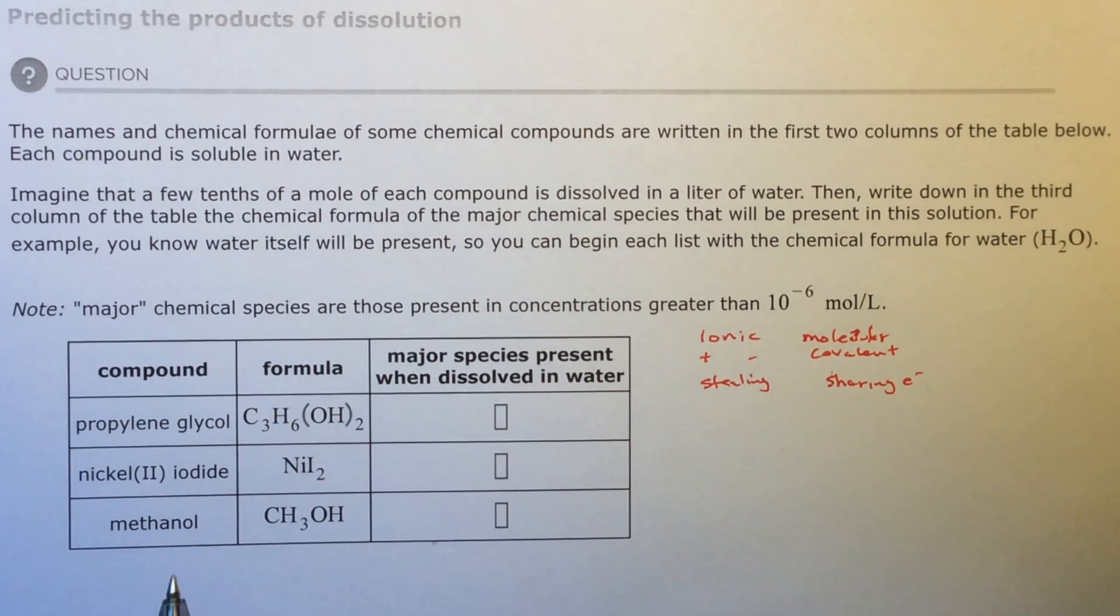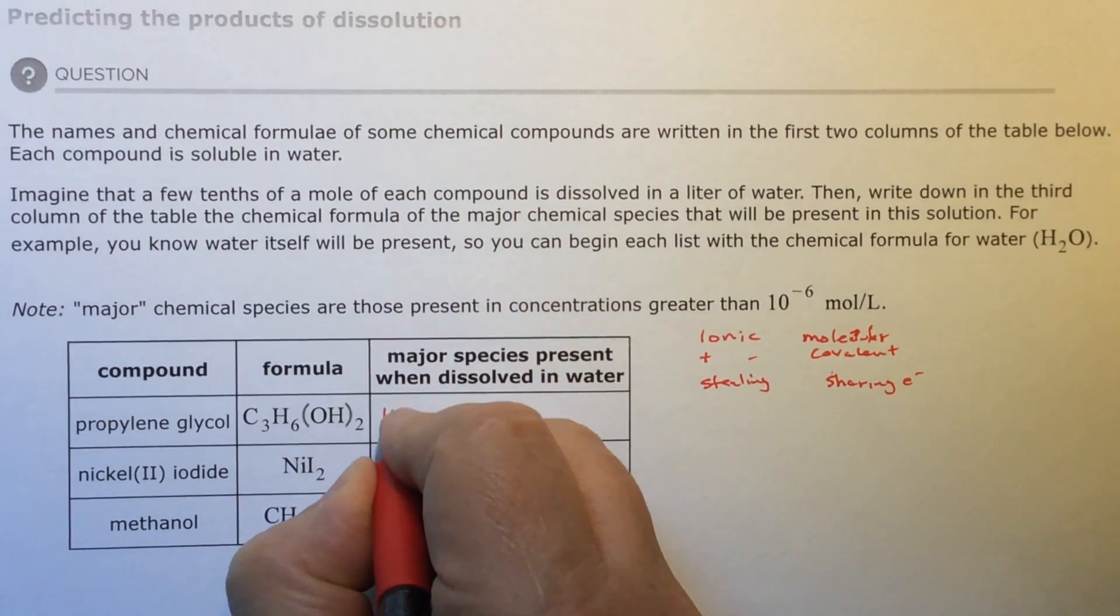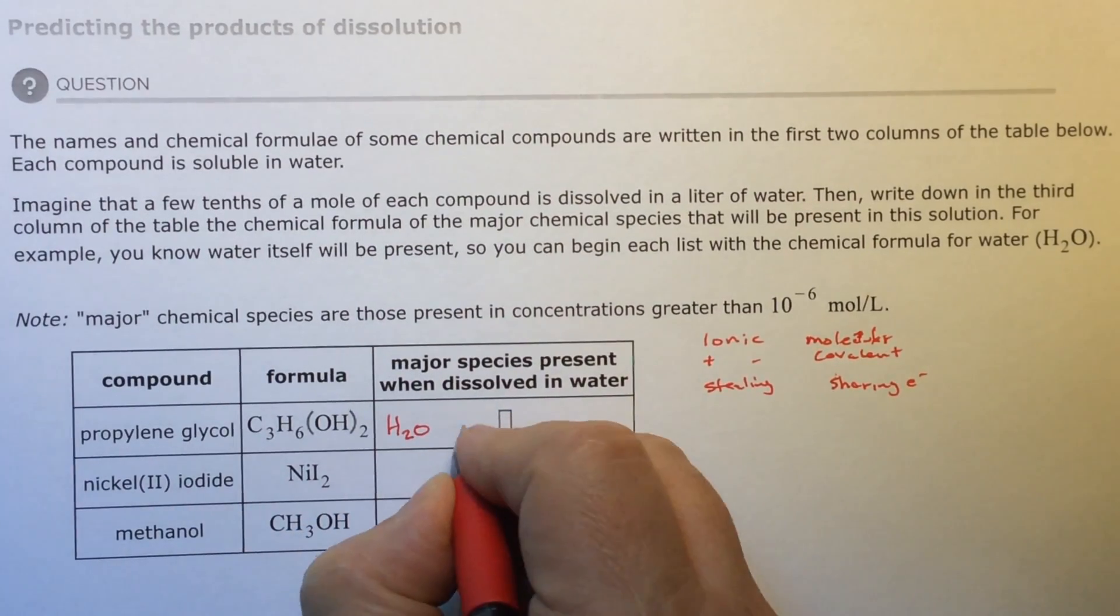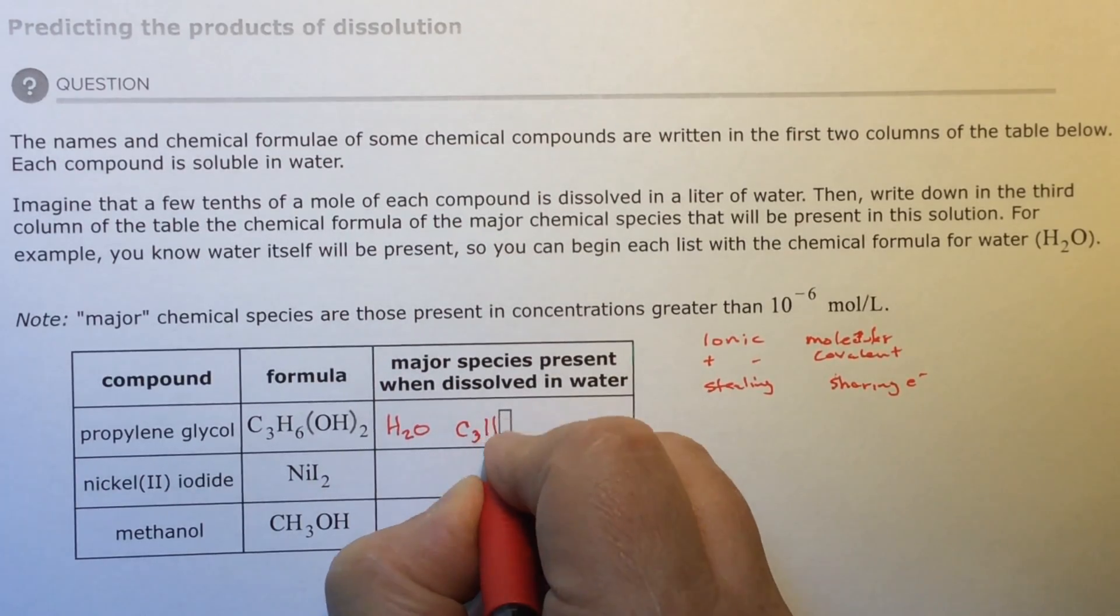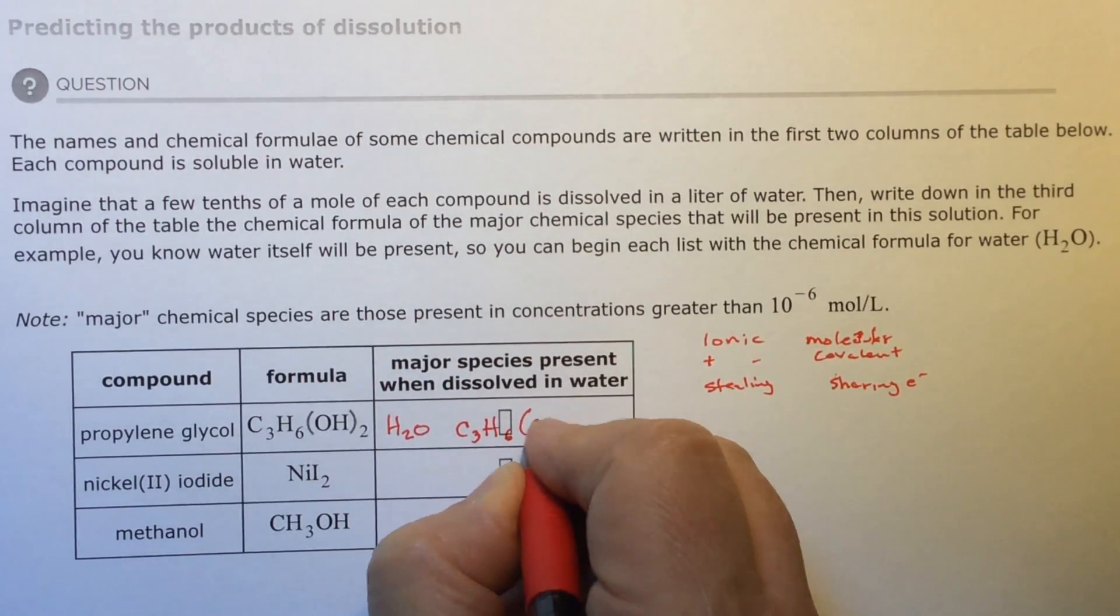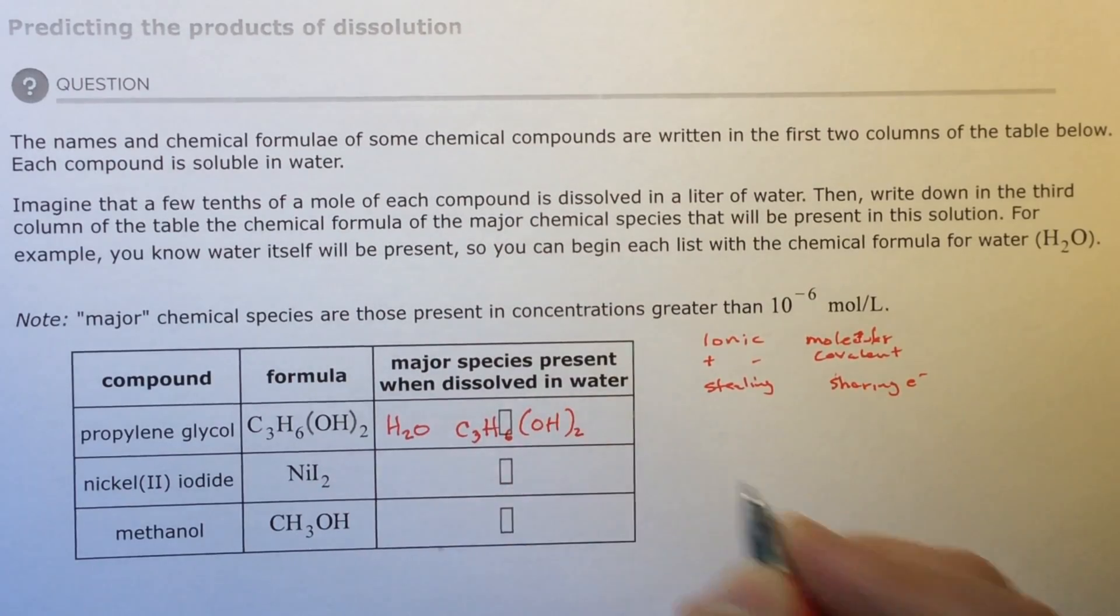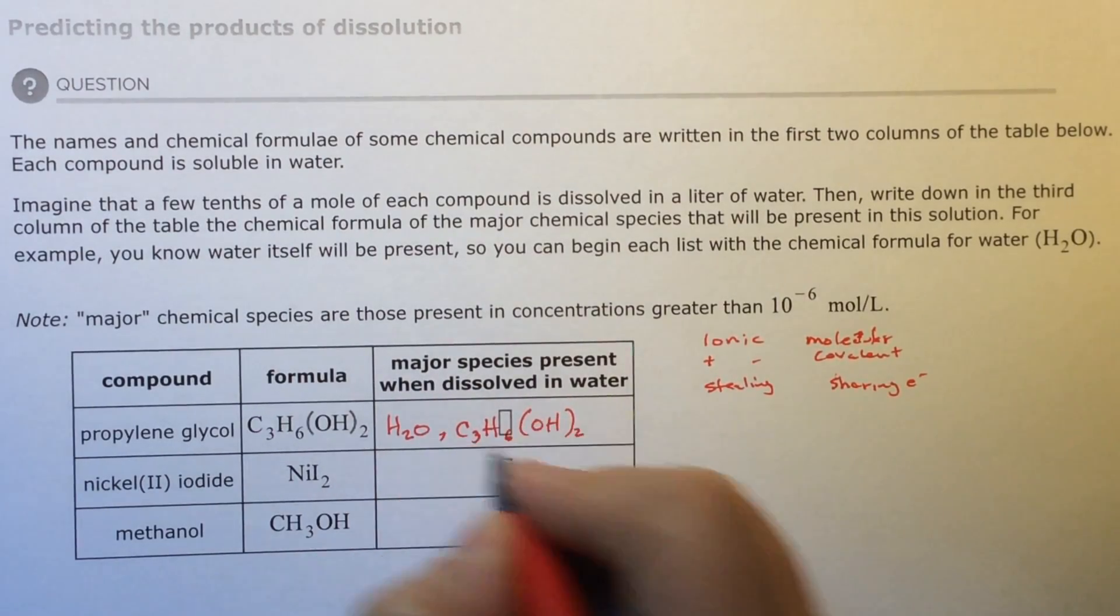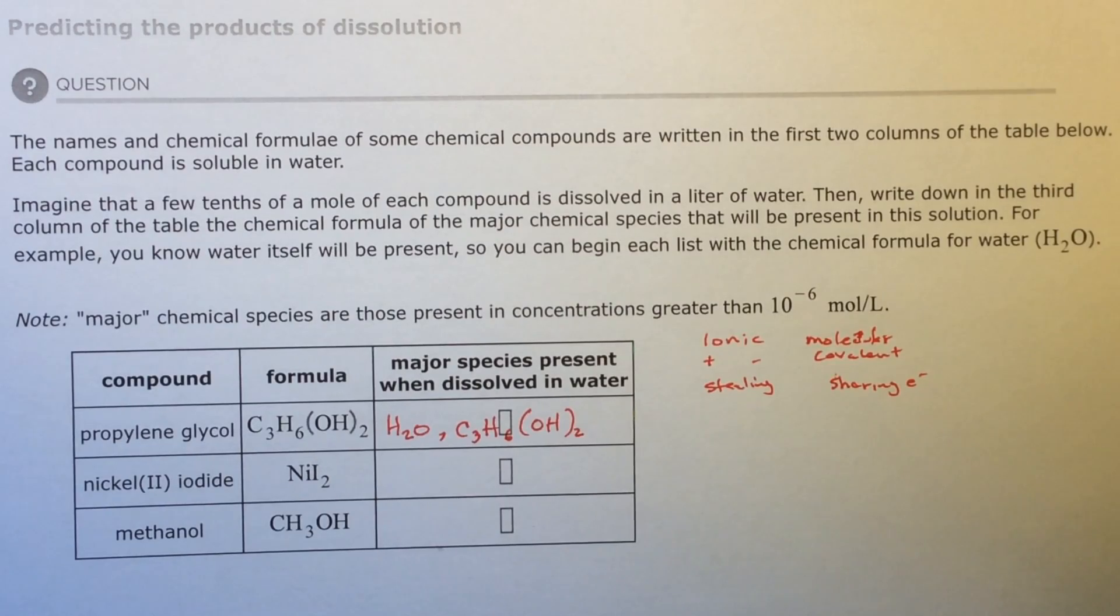Since they're nonmetals, that's a covalent bond and water can't rip it apart. So you're going to have water and you're also going to have the propylene glycol. Those are the two things you're going to have.